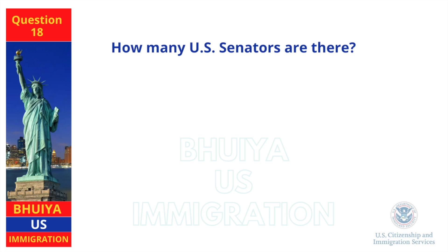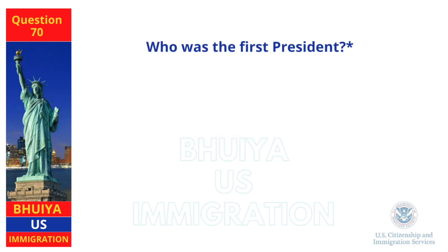How many U.S. senators are there? One hundred. Who was the first president? George Washington.